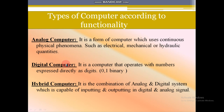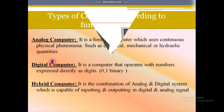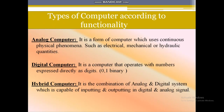A digital computer is a computer that operates with numbers expressed directly as digits — that is called binary digits or binary numbers. Computers have a language called binary language, which uses zero and one. Hybrid is a combination: a hybrid computer is the combination of analog and digital computers, which is capable of inputting and outputting in both digital and analog signals.